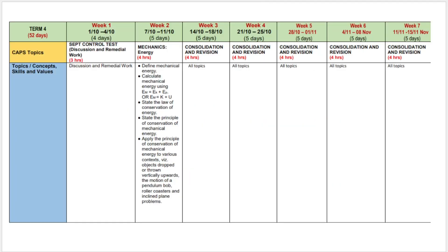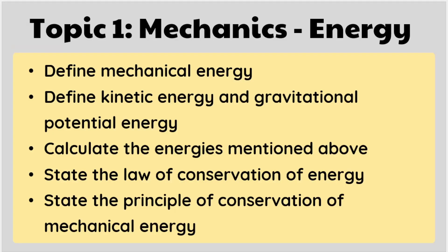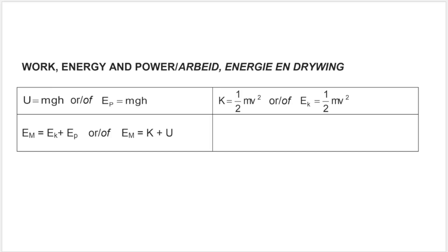This is what the ATP document looks like, and as you can see, in term 4 we only have one topic to cover for physical sciences, and that is energy. We can ask you to define mechanical energy as well as kinetic and potential energy, and you could be asked to calculate each of these. They all have different formulas that you'll be given on a formula sheet — here's what the formula sheet looks like for this section. It's a good idea to take down these formulae if you don't have them.